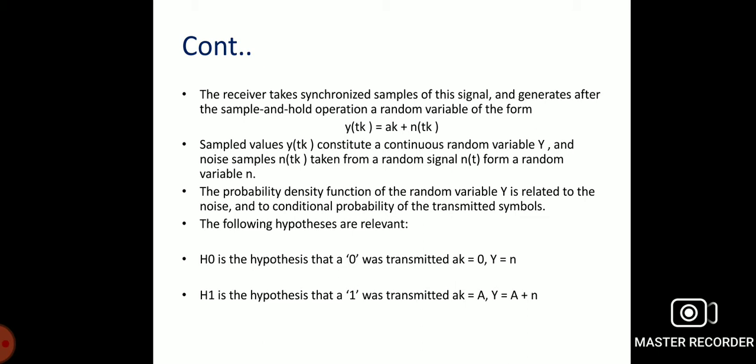The lowest-complexity decision rule for deciding the received binary values is the hard decision, which consists of comparing the sampled value y(t_k) with a threshold u, such that if y(t_k) > u the receiver considers the transmitted bit is 1, and if y(t_k) < u the signal is converted to an apparently noise-free signal but possibly containing some errors with respect to the original transmitted signal.